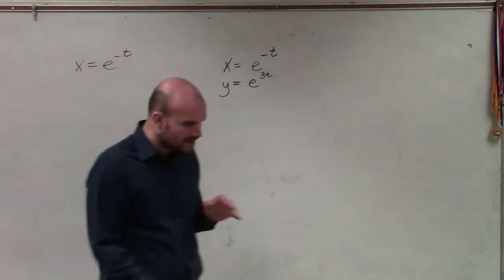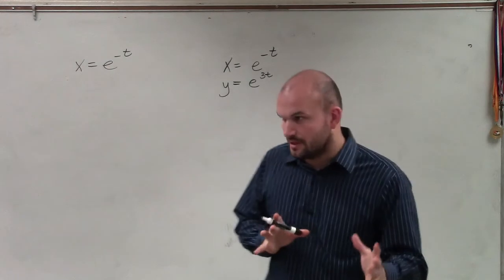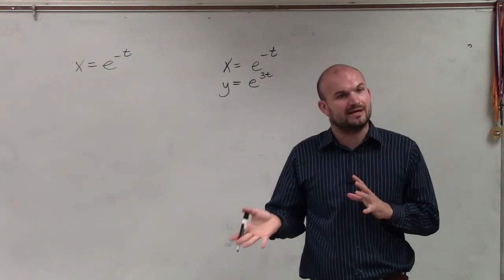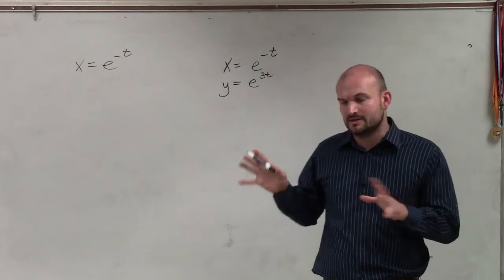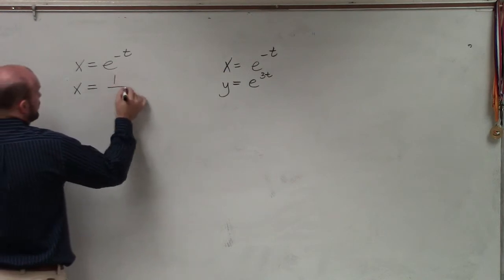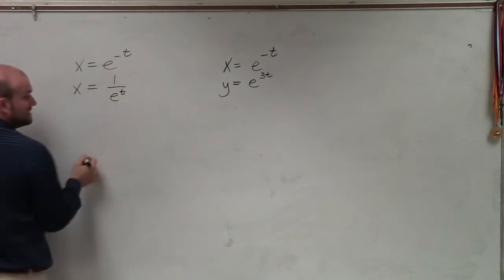Now, without using logarithms, I'm just going to rewrite this and solve for t, and I'm going to plug that one back in without having to deal with the logs initially. So to do that, to solve for x, I can rewrite this as 1 over e to the t.